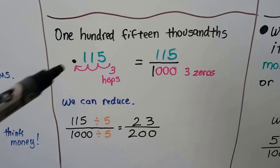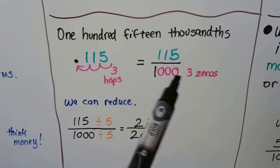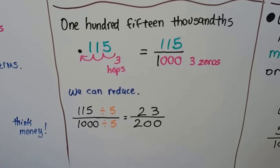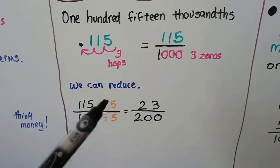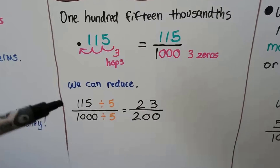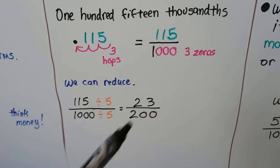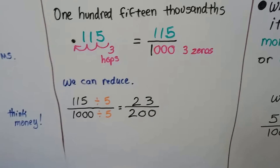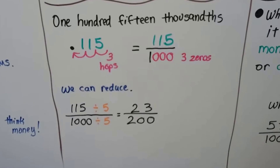Here we have 0.115 — one hundred fifteen thousandths. There are three hops to the decimal place, so our denominator has three zeros. We write 115 as the numerator: 115 one-thousandths. We can reduce this — both can be divided by 5. 115 divided by 5 is 23, and 1,000 divided by 5 is 200. And 23 is also a prime number — the only thing we can multiply to get 23 is 23 times 1. So it's fully reduced.